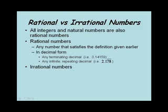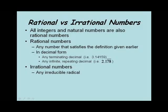The irrational numbers: any irreducible radical — the square root of two cannot be reduced. Any time you try to write the square root of two in decimal form, it's an approximation. You cannot write the square root of two as an exact number in decimal form because the decimal goes on forever, it never terminates or ends, and it never repeats. Numbers that we've seen in other classes, such as e or pi, are well-known, often-used irrational numbers.